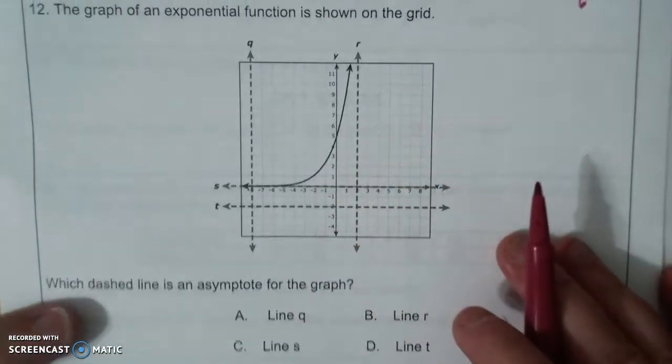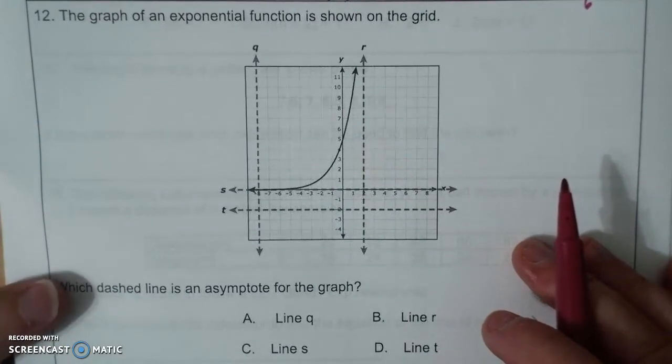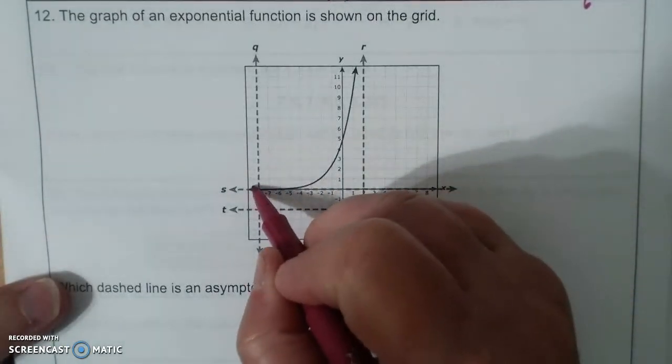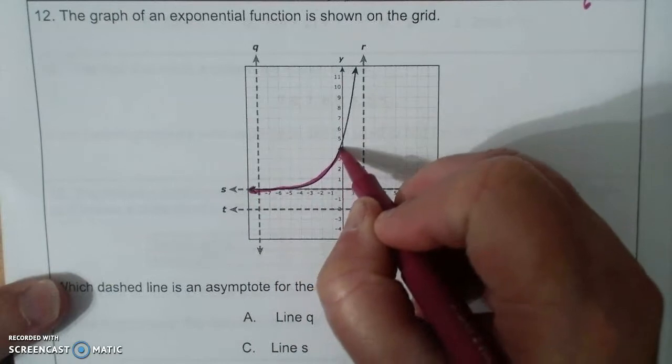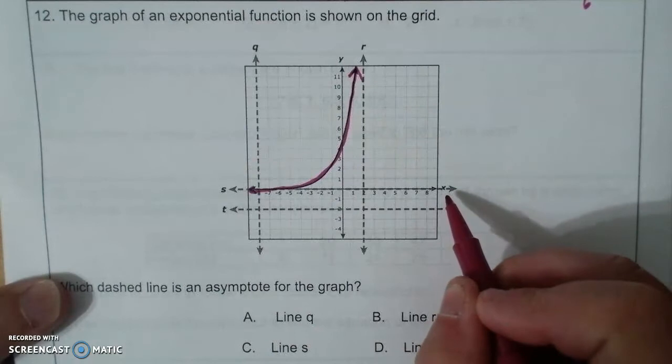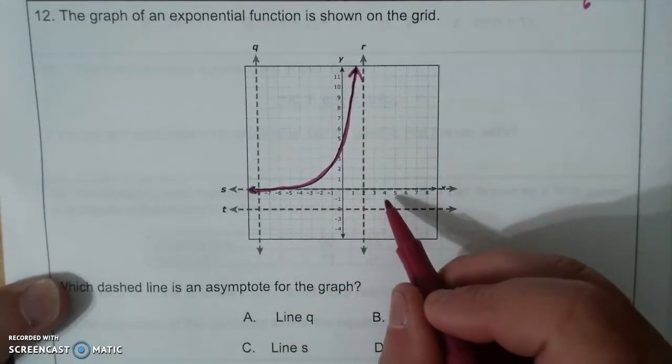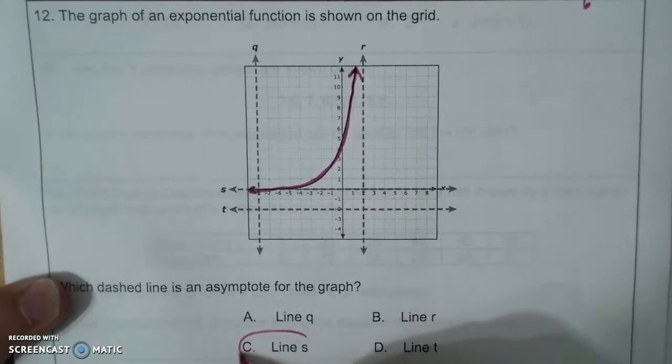The graph of an exponential function is shown on the grid. Which dashed line is an asymptote? So if this is my exponential, which one is an asymptote? It is this one which is at y equals zero, which is line s.